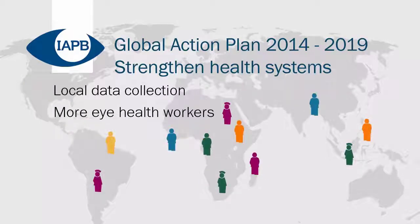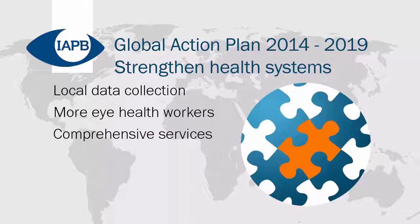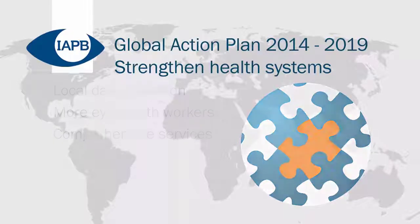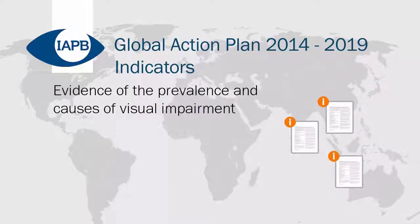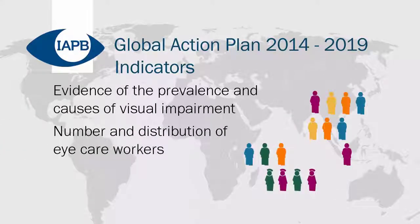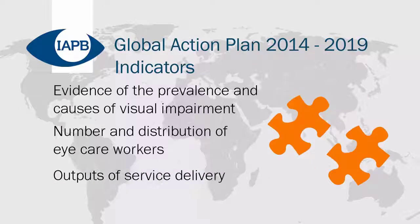More eye health workers must be trained and the workforce must be distributed appropriately. Training must also be strengthened to ensure excellence in service delivery. Eye care services must become more comprehensive, covering prevention, promotion, treatment and rehabilitation services. Three indicators will measure whether the action plan's target is achieved: evidence on the prevalence and causes of visual impairment, numbers of eye care workers and their distribution, and outputs of service delivery. As cataract is the main cause of blindness, this indicator will be measured through cataract surgical rate and cataract surgical coverage.